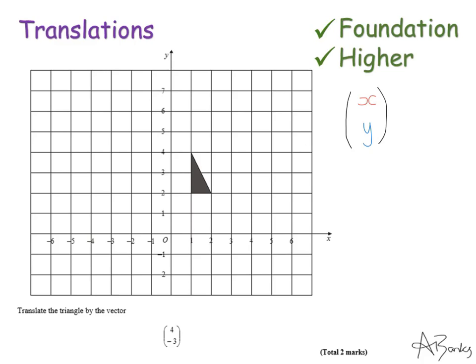The x number, the number that's on the top, tells us whether we are going left or right and how far we're going. If the number's a positive number then we're moving to the right and if our number is a negative number we're moving to the left.